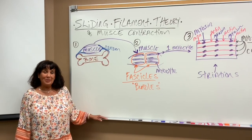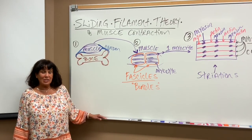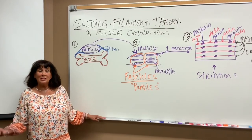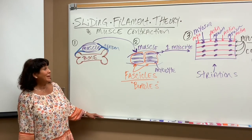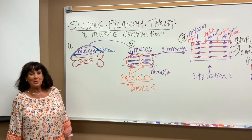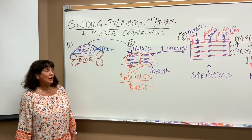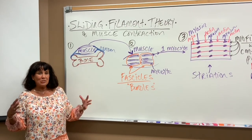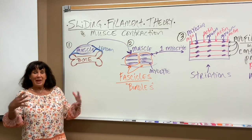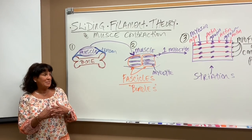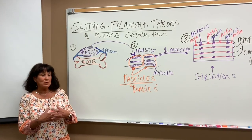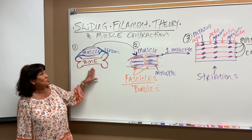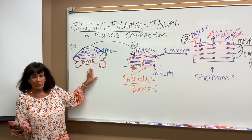Now we're going to talk about how muscle cells or muscle tissue contracts. I have several steps up here working up to the final big contraction and cross-linking of the actin and myosin proteins. So we're going to start out just for a quick review.